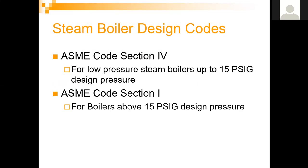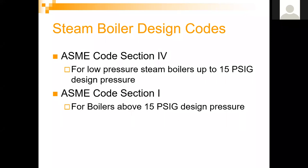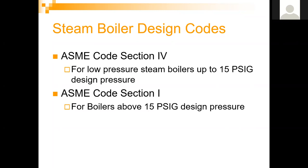Steam boiler design codes: ASME Code Section 4 is for low pressure steam boilers, basically up to 15 PSIG design pressure, meaning a relief valve must be set no higher than 15 PSI. You're really getting a maximum operating pressure of about 10 to 12 PSIG out of those boilers, maybe 13 if you really push it. That's the maximum for a low pressure steam boiler.